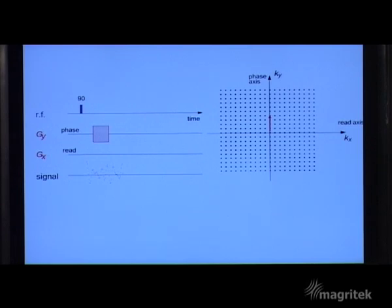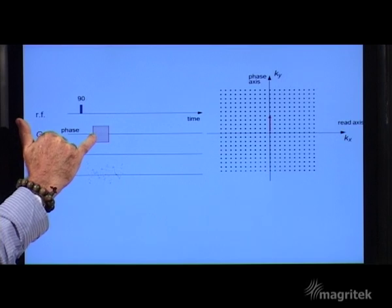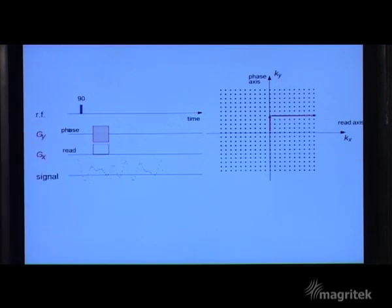And we're going to start off with applying a magnetic field gradient as a pulse along the y-axis. Here we see this pulse here. What has it done?